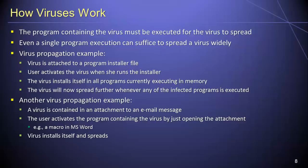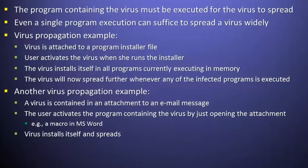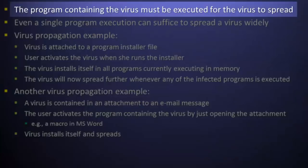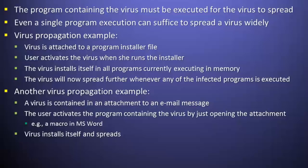We will now take a closer look at how computer viruses work. Recall that a virus is a hidden, self-replicating computer program that propagates by attaching itself to other programs. This means that the host program to which a virus is attached must be executed at least once in order for the virus to spread. A resident virus can establish itself in system memory and can remain active without its host, so even a single execution of the host program can be sufficient to spread the virus widely.